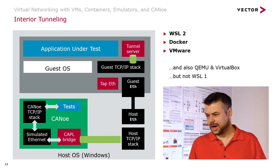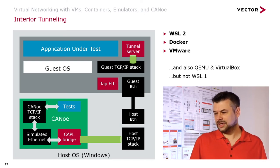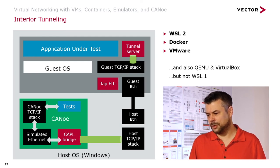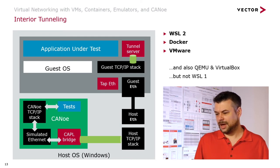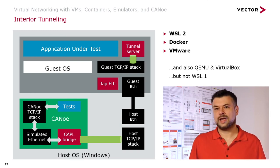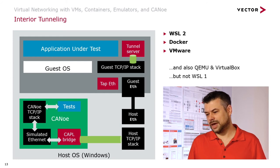At the CANoe side, the situation is pretty much the same as with exterior tunneling — we need some glue code which behaves just like the opposite of our tunnel server. This approach is pretty universal and principally works with any virtualization tool that emulates a full operating system kernel. This applies to virtual machines, Docker, and instruction set simulators — but not WSL1, since it does not emulate a kernel.